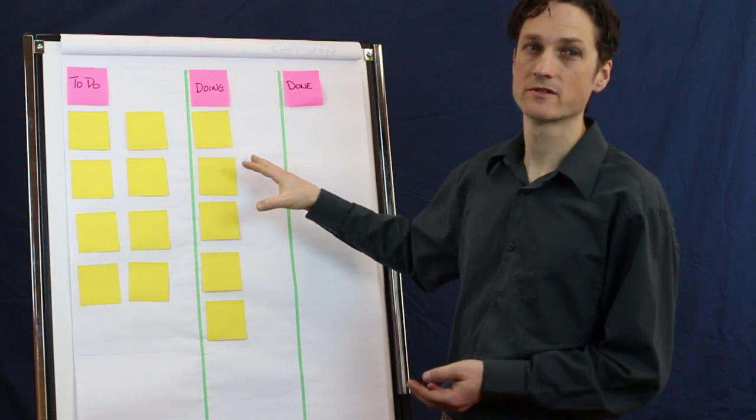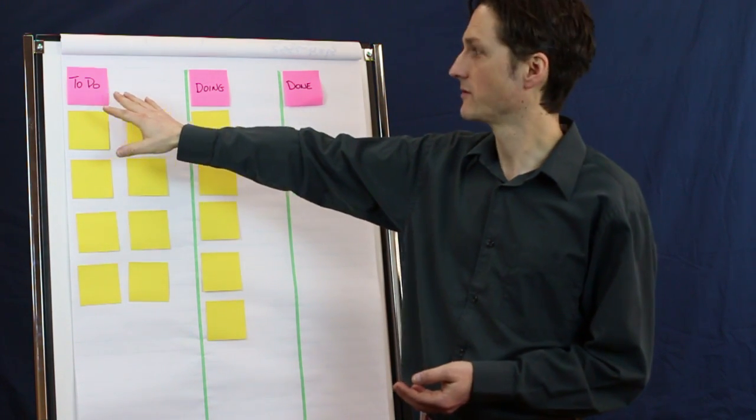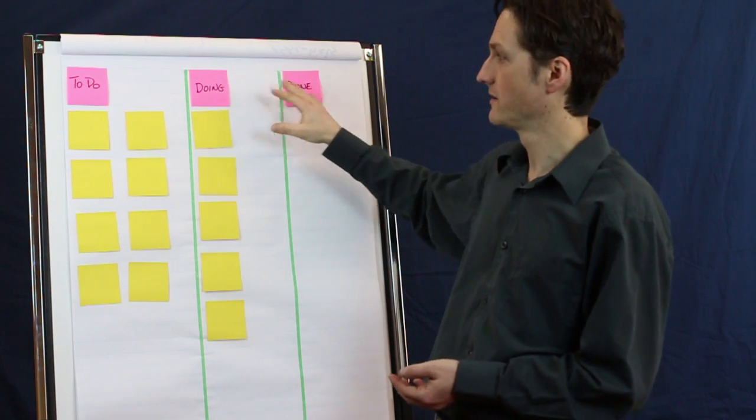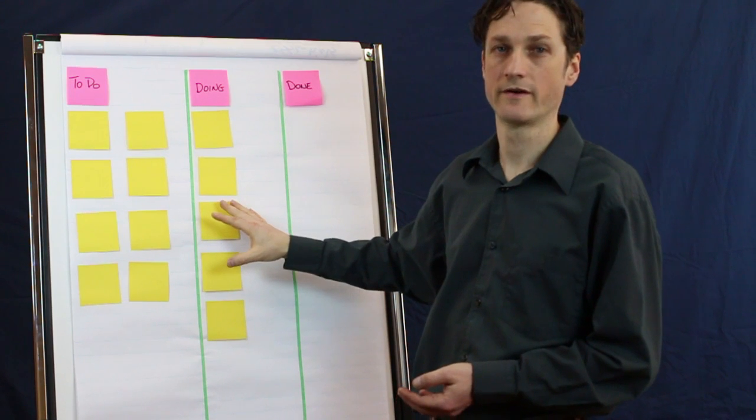A basic personal Kanban system will have a workflow that goes from left to right with these three columns, and then underneath you have all of your work items.